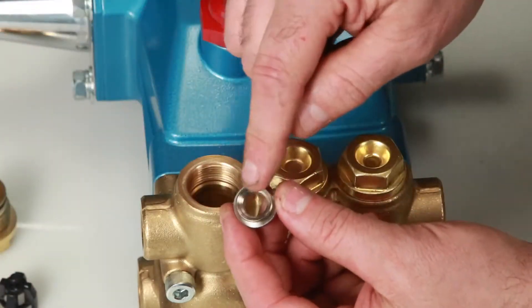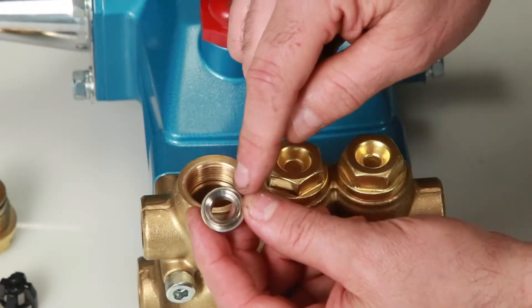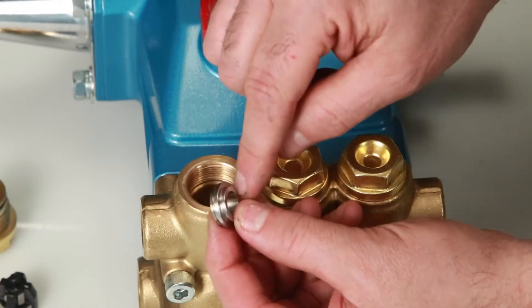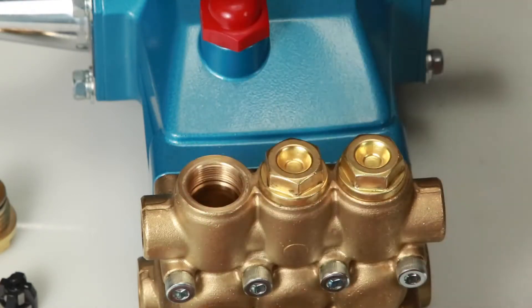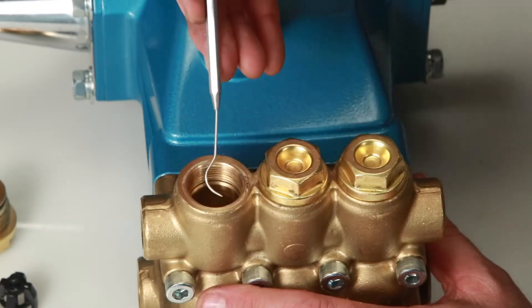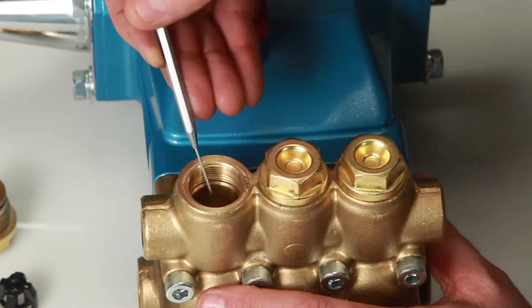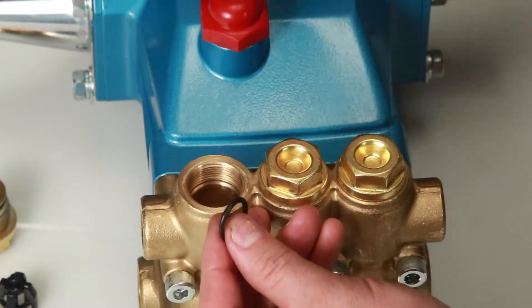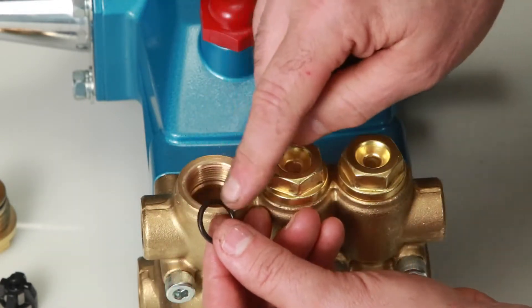Inspect tapered surface of valve seat for wear, pitting, or damage. Pitting on the valve seat or valve is an indication of cavitation. Remove the O-ring from the manifold using a small screwdriver or pick. Inspect for cuts or nicks.